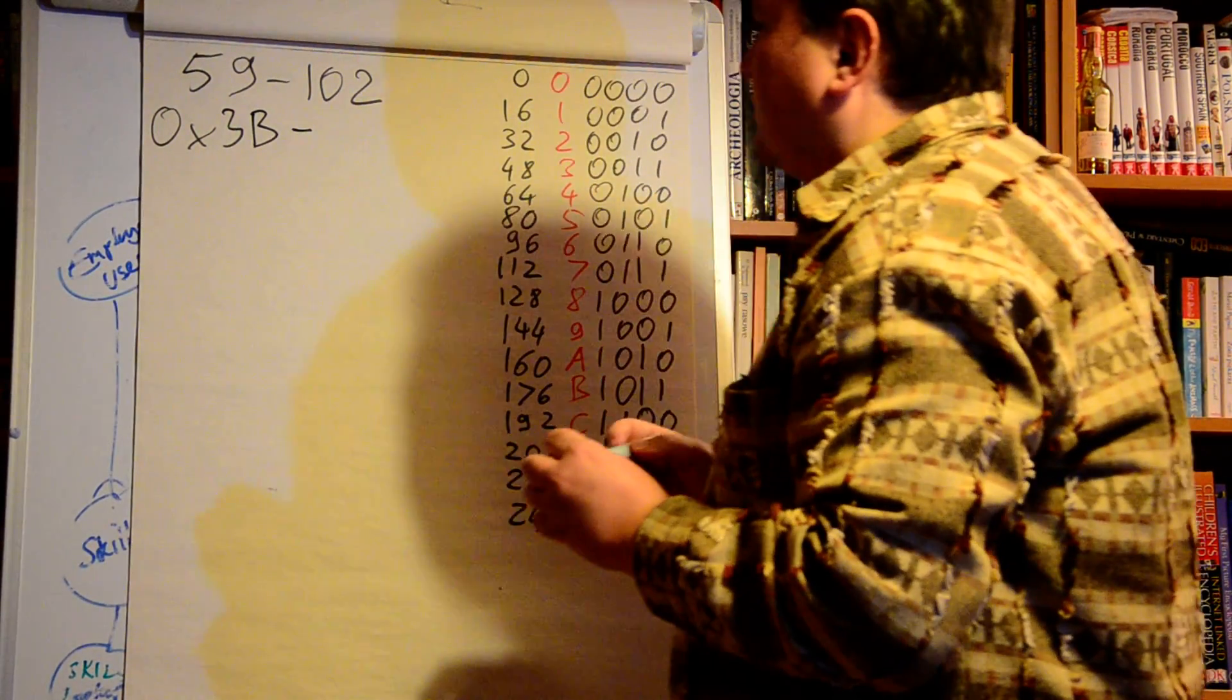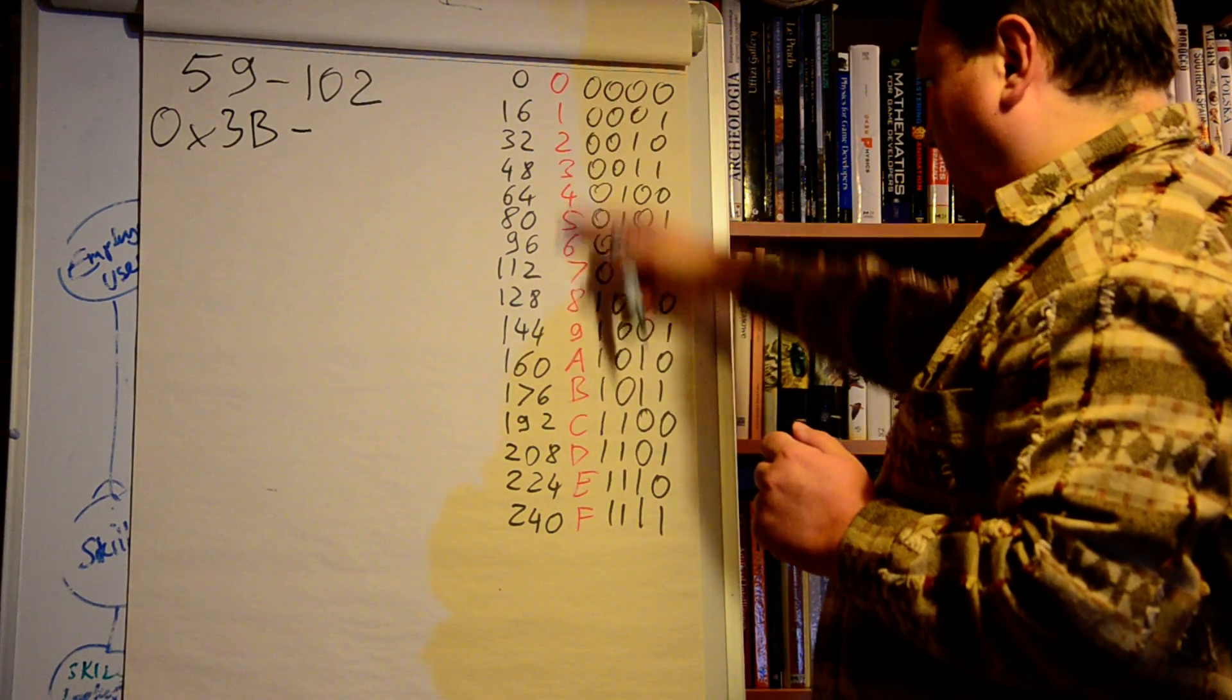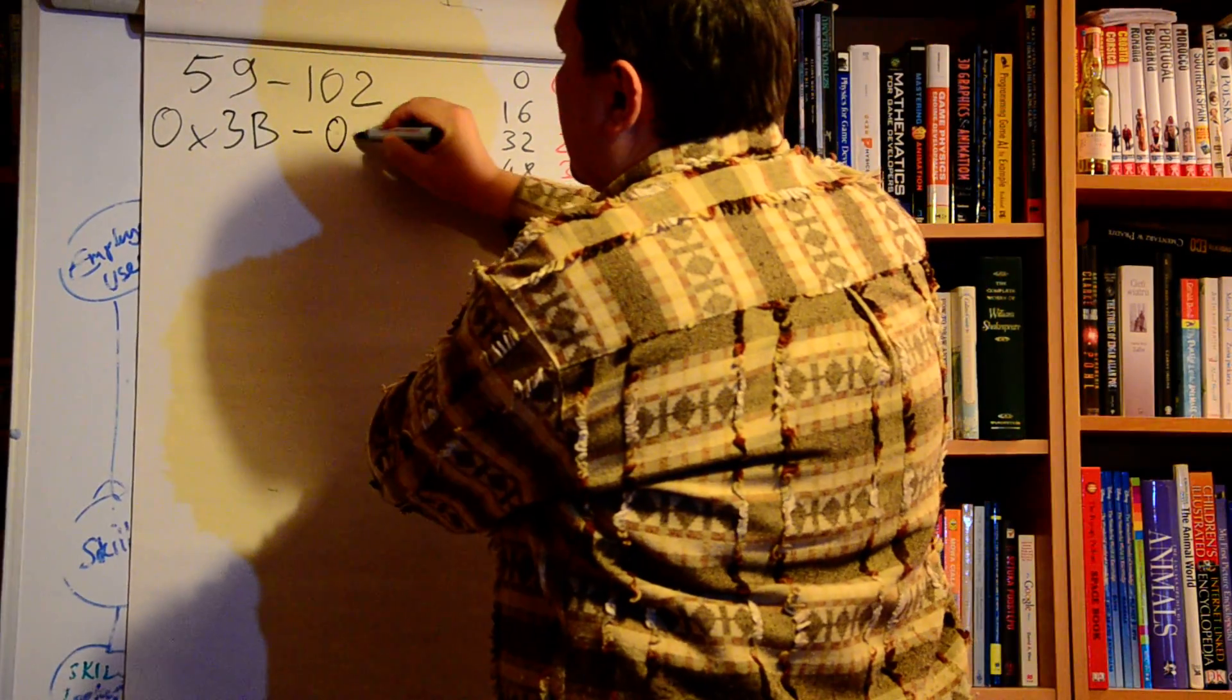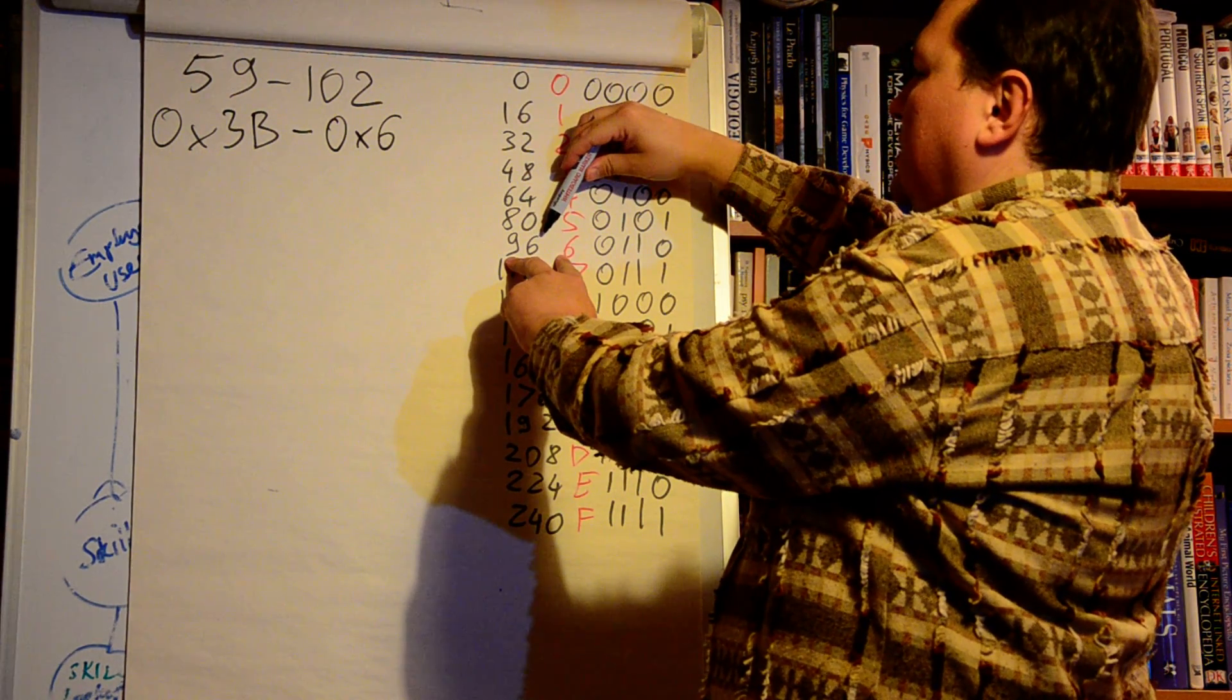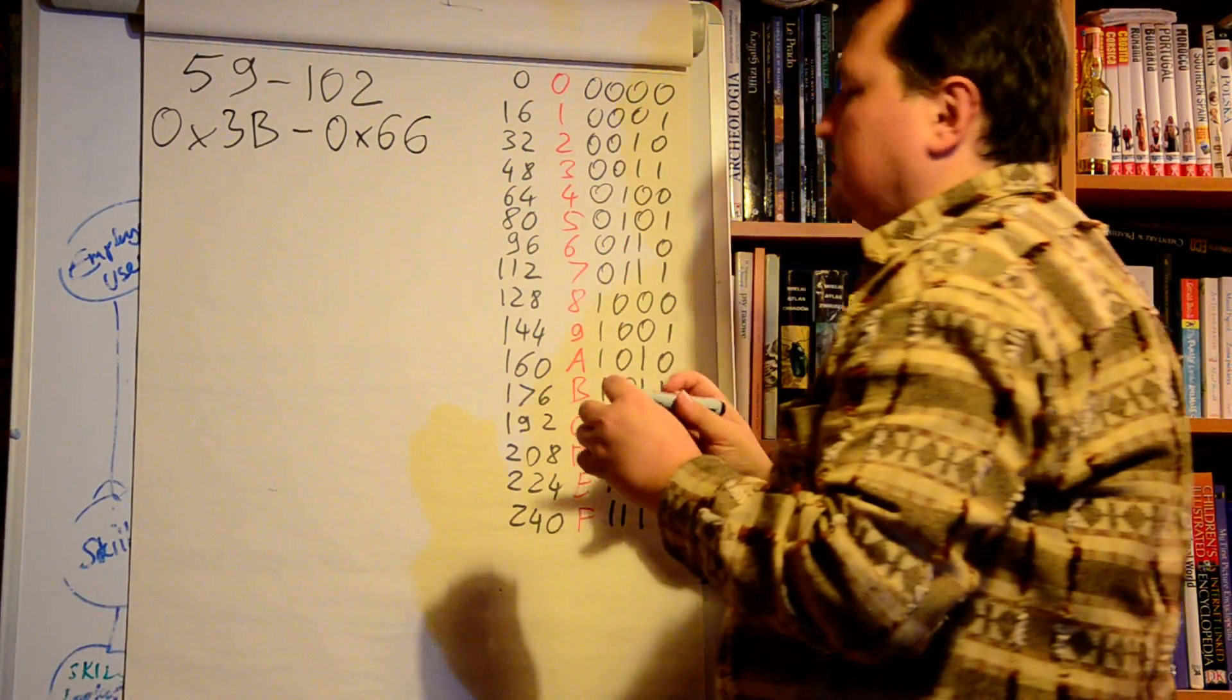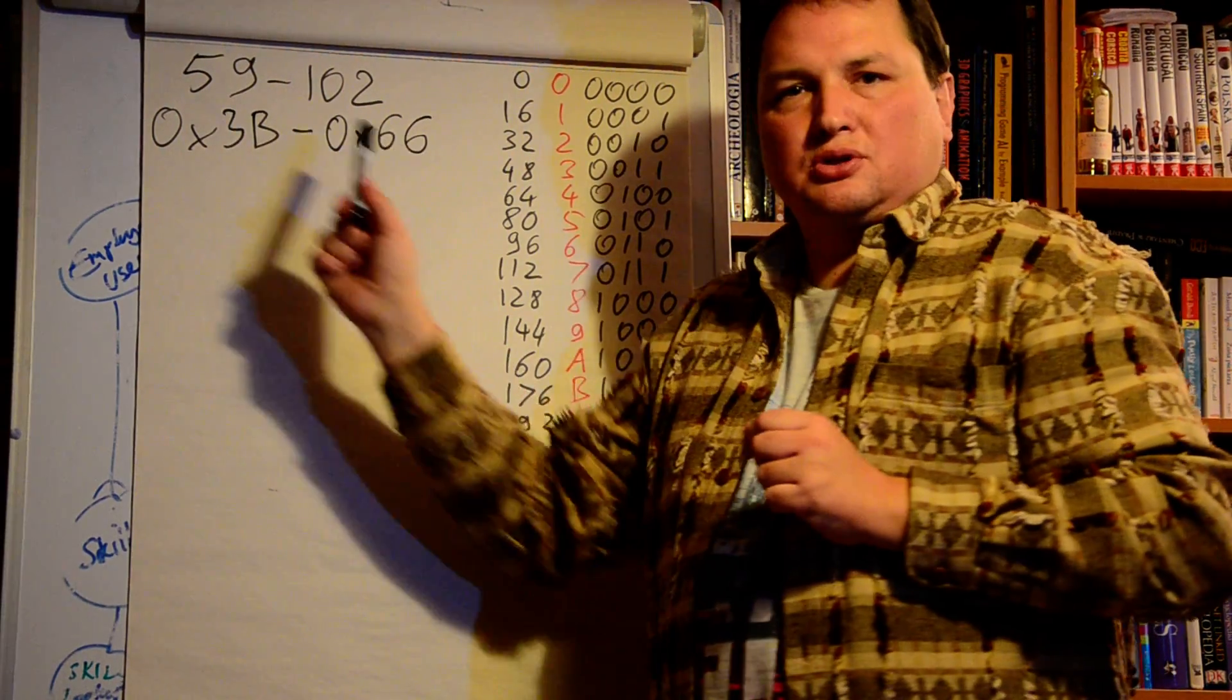So we have 3B minus, using the same method for 102. 102 will be here, so it's 6. 102 minus 96 is 6. So we have now hexadecimal representation of our operation: 0x3B minus 0x66.